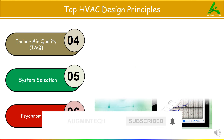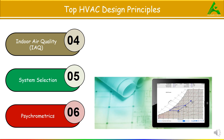The sixth principle is Psychrometrics. Psychrometrics is used to understand the relationship between temperature, humidity, and human comfort.